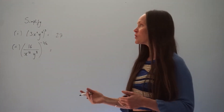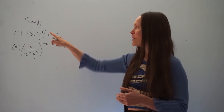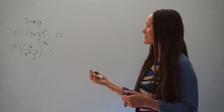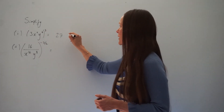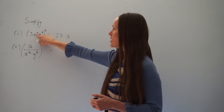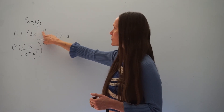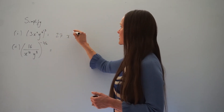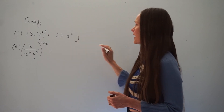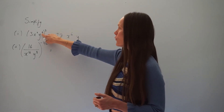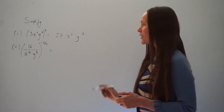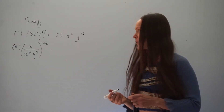We're multiplying both powers by the number 3 outside the brackets. Taking the power on x first — we have positive 2, so 2 times 3 is 6. That's the new power on the x value. And for y, we have 4 multiplied by 3, which is 12. So the final answer to part 1 is 27x to the power of 6, y to the power of 12.